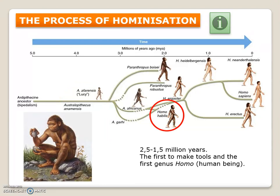The next important species is the Homo habilis. The name comes from the ability to make tools — it is the first species able to make tools, and we call it the first Homo, the first true human being, because of this intelligence and ability to make tools.